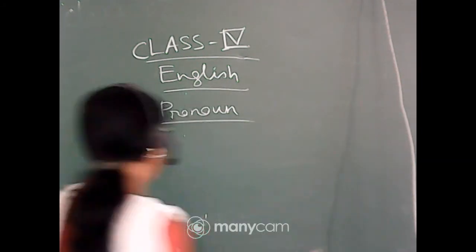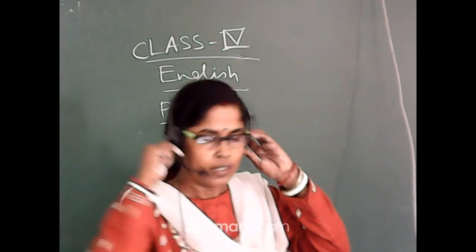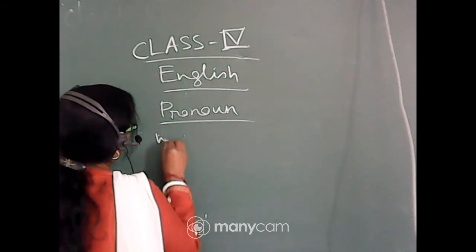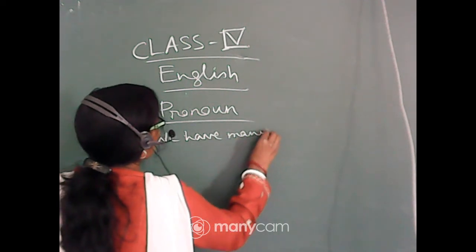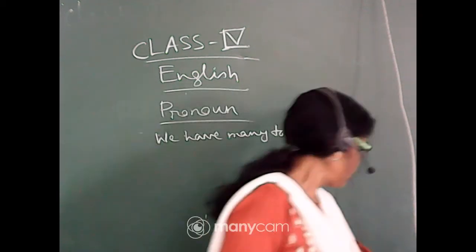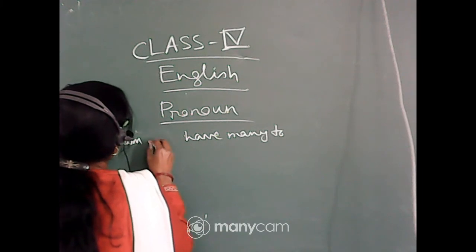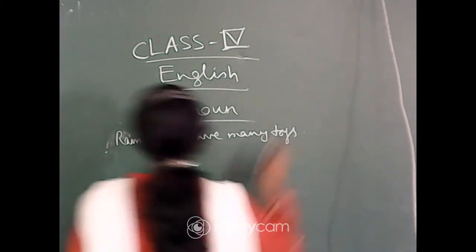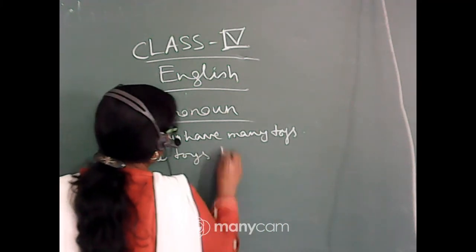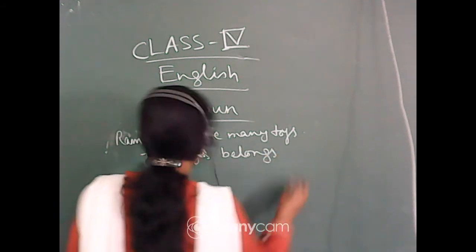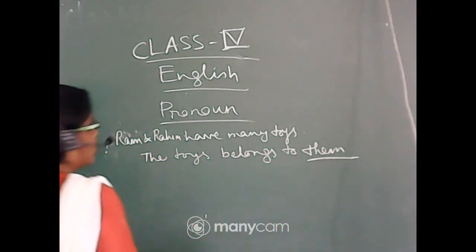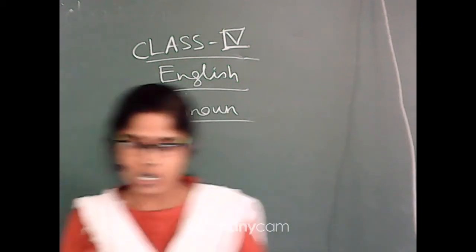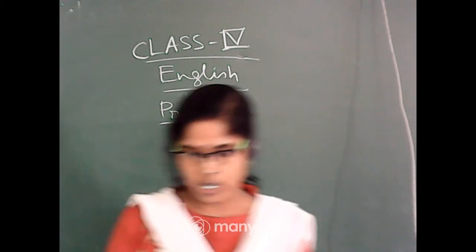Another example: a pronoun is used to show that a thing belongs to somebody or someone. For example: Ram and Rohim have many toys. The toys belong to them. 'Them' refers to Ram and Rohim. Similarly, pronouns like 'ours' and 'mine' can be used to show that a thing belongs to somebody or someone.